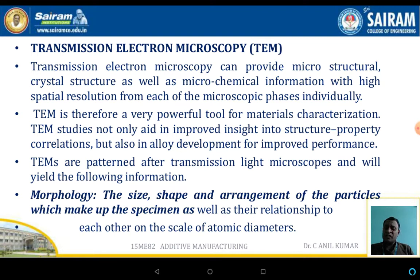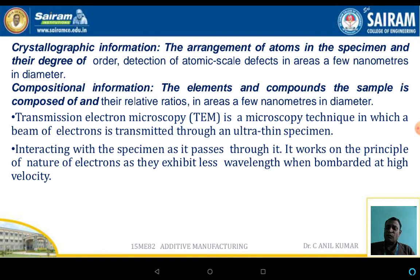The first basic information obtained from TEM is the size, shapes, and arrangements of particles that make up the specimen — that is, the morphology — or the relationship of each other at the atomic level. The second is the arrangement of atoms in the specimen, the degree of order, and detection of atomic-scale defects in areas of a few nanometers. This is the crystallographic information where defects can be identified at the nano level.